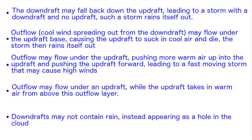Outflow may flow under the updraft base, causing the updraft to suck in cool air and die, and again the storm will rain itself out without an updraft. Sometimes outflow can flow under the updraft without getting sucked into it and just pushes more warm air up into the updraft, pushing the updraft forward. This can result in a fast-moving storm with strong winds.